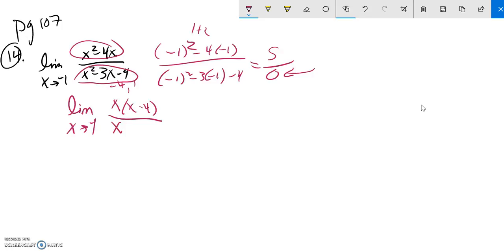This would be x plus 1 times x minus 4. Divide those out. And notice I get a limit as x approaches negative 1 of x over x plus 1. And if I try to plug that negative 1 in, notice I get negative 1 over 0. I get this indeterminate form again. So this factoring didn't actually do anything for me.